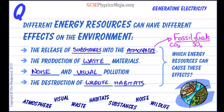Technologies are developing to try and trap these gases as they come out of power stations to reduce the amount they emit. The production of waste materials — a classic case of that is nuclear energy. Nuclear power plants generate highly radioactive waste and lower-level radioactive waste, which has to be stored very carefully and safely for hundreds of years.